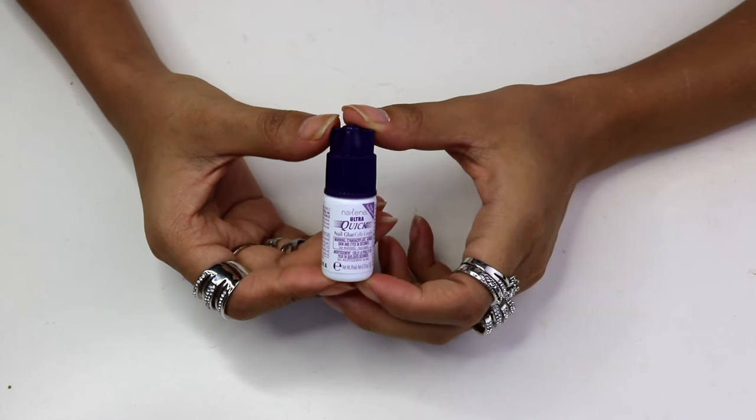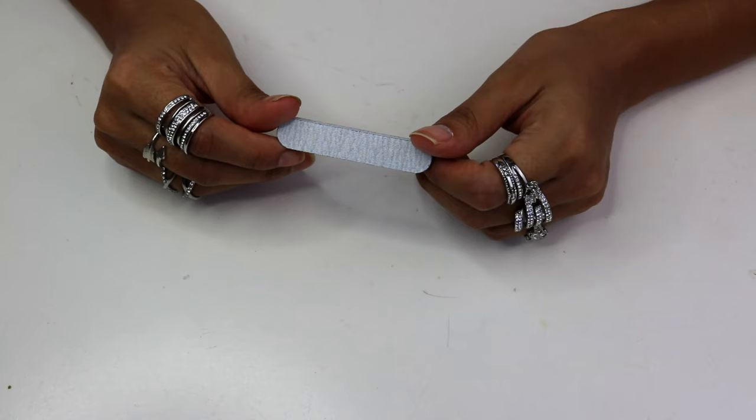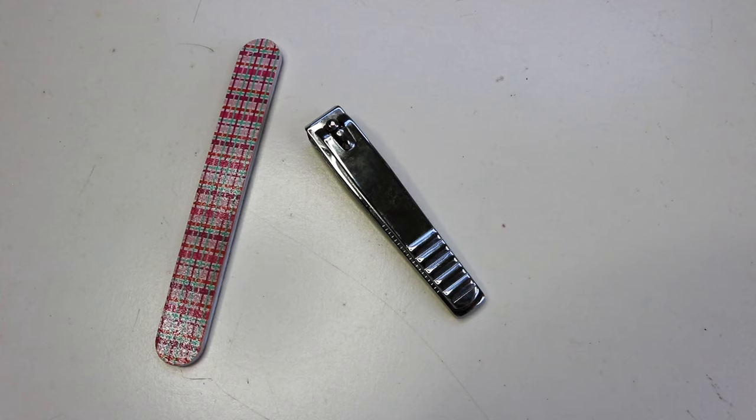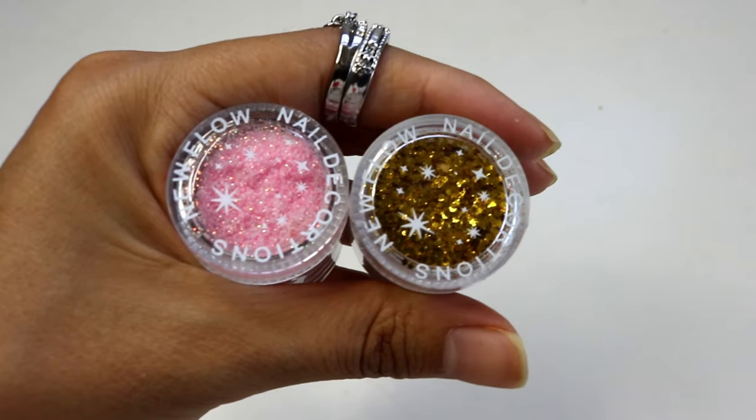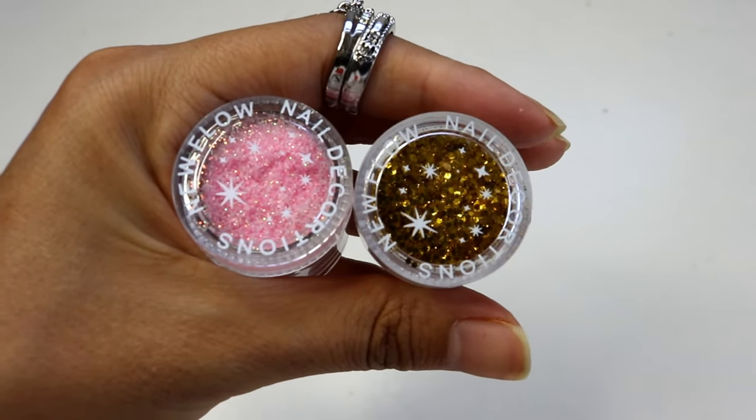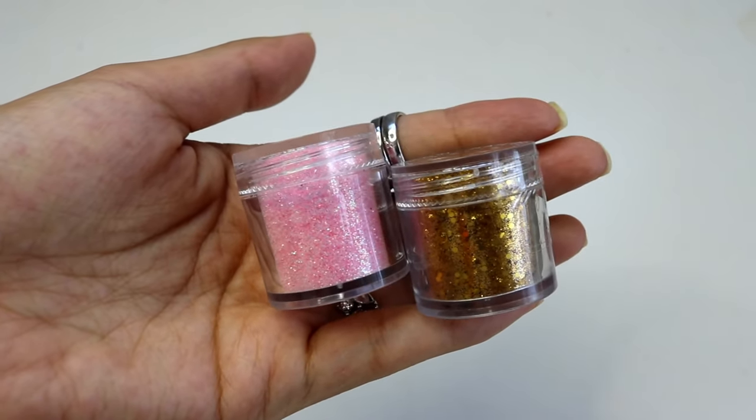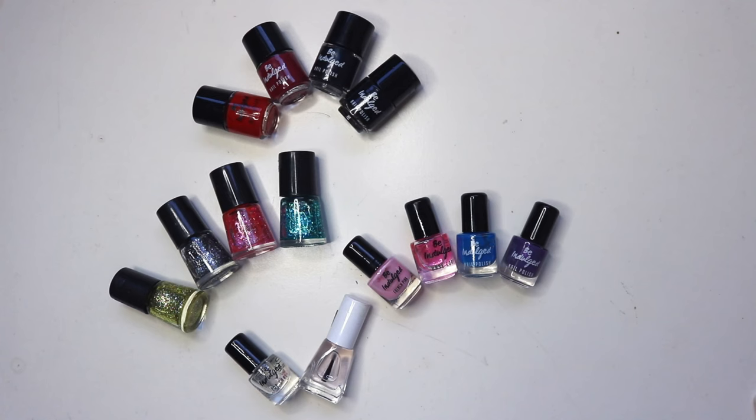You will also need some cotton balls, nail polish remover, a nail clipper, some glitters only if you want. I got here one pink and one golden glitter jar because I wasn't sure which one to go for, and lastly a nail paint of your choice and a top coat.